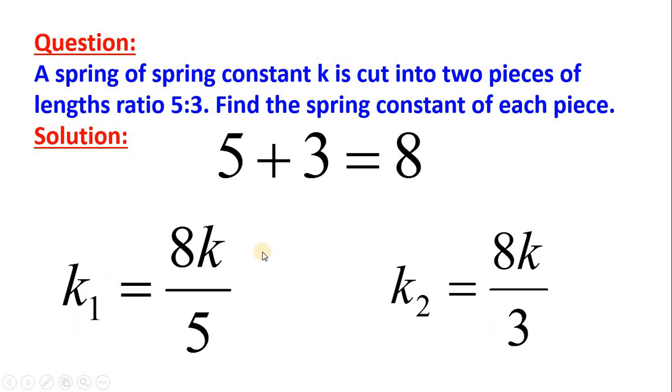We get this answer K1 and K2 as 8K by 5, 8K by 3. Within 5 seconds, you can tell what will be the spring constants of the two small pieces. Let us practice one more question on the next page.